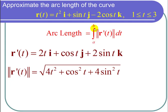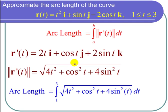So I need to integrate this from a to b. a is 1 and b is 3 so that the arc length is equal to the integral from 1 to 3 of the square root of 4t squared plus cosine squared of t plus 4 sine squared of t dt.